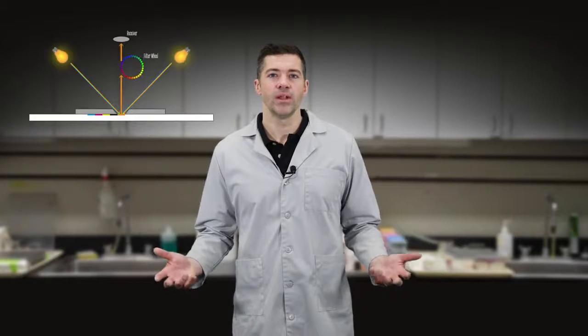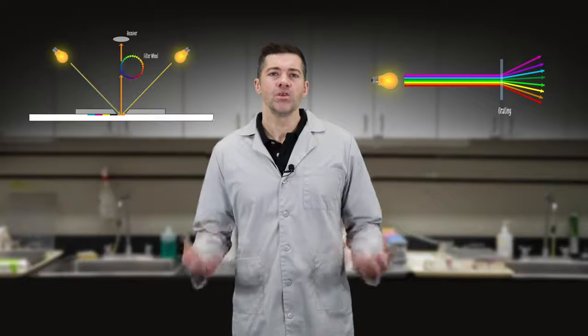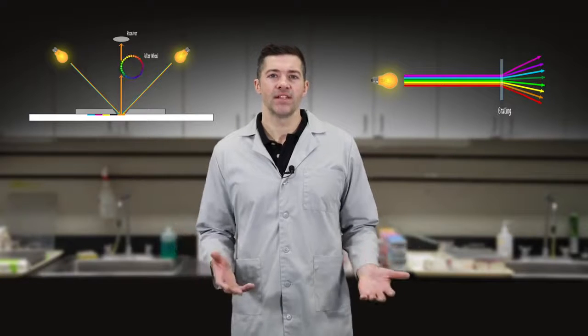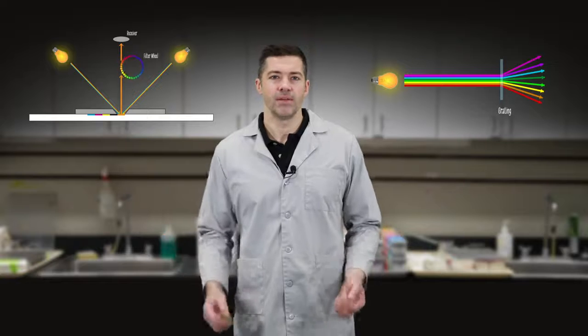This is typically achieved within an instrument using a spinning filter wheel of specially designed colors or a diffraction grading. The resulting measurement is the sample's reflectance curve with a varying wavelength from around 400 to 700 nanometers. From this, we can compare the curves of two samples to see if they are a match.